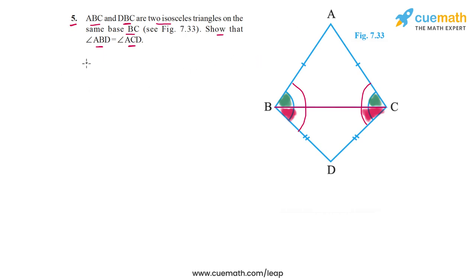So let's write it out properly. In triangle ABC, because this is an isosceles triangle with AB equal to AC, we have angle ABC is equal to angle ACB. I'm going to call this equation 1, and this follows because triangle ABC is isosceles with AB equal to AC, and angles opposite equal sides are equal.